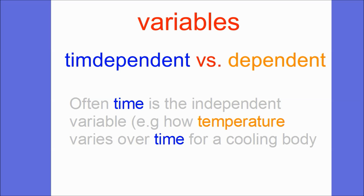Time is often the independent variable — you can think of it as the 'tim-dependent' variable. For example, in distance-time graphs, time goes on the bottom axis because it's the independent variable. If something is cooling down over time, time is the thing we're controlling because we decide how often we're going to measure it.